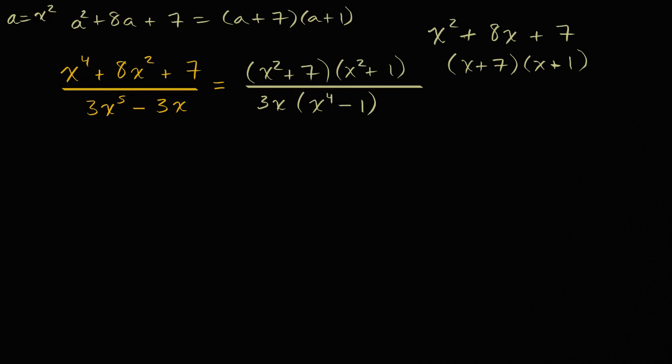And you might say, wait, I'm always used to recognizing a difference of squares as something like a squared minus one, which you could write as a plus one times a minus one. Well, this would be a squared minus one if you say that a is equal to x squared, then this would be a squared minus one.